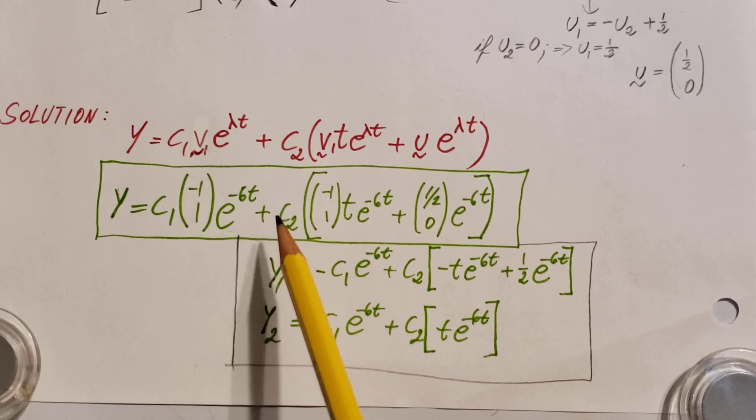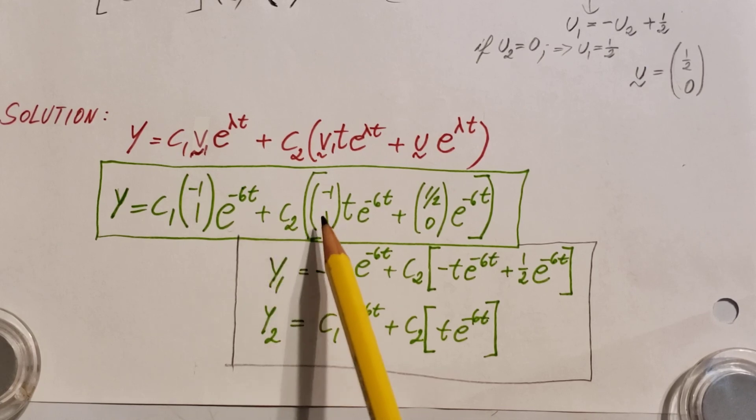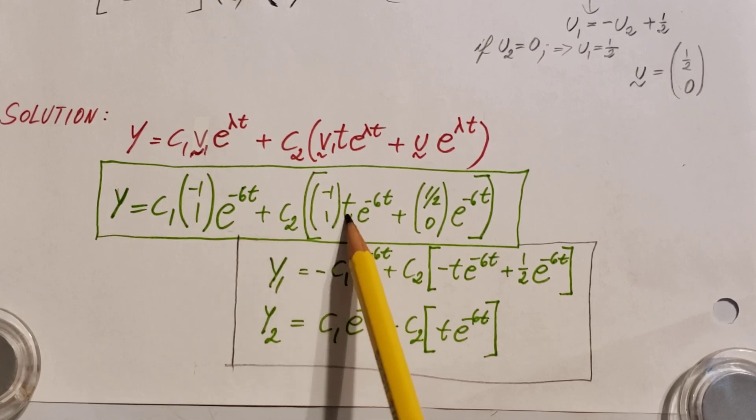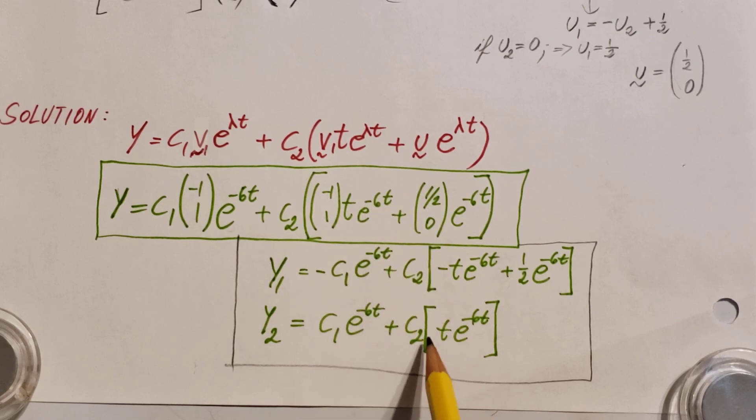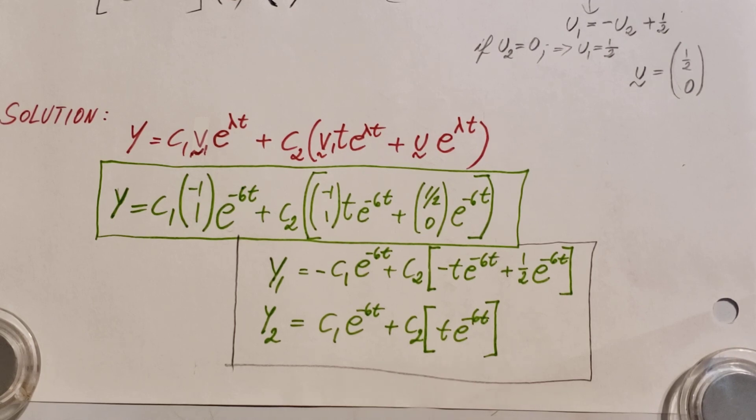Plus c2 in parentheses, we have 1 times t, e negative 6t. That's what you have here. And here you have 0 times e to whatever, it's 0. So just ignore it. There you go, that's our final solution.